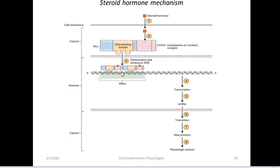The hormone-receptor complex undergoes dimerization — dimer means it divides into two, forming two units each with a hormone bound. These dimers bind to the DNA at specific points called steroid response elements (SRE). When that happens, it activates transcription and activates RNA polymerase, which is the major transcription enzyme. Transcription is the process by which a gene's DNA sequence is copied to make an RNA. Messenger RNA is produced and transported into the cytoplasm, where it interacts with ribosomes to produce a new protein in a process called translation.